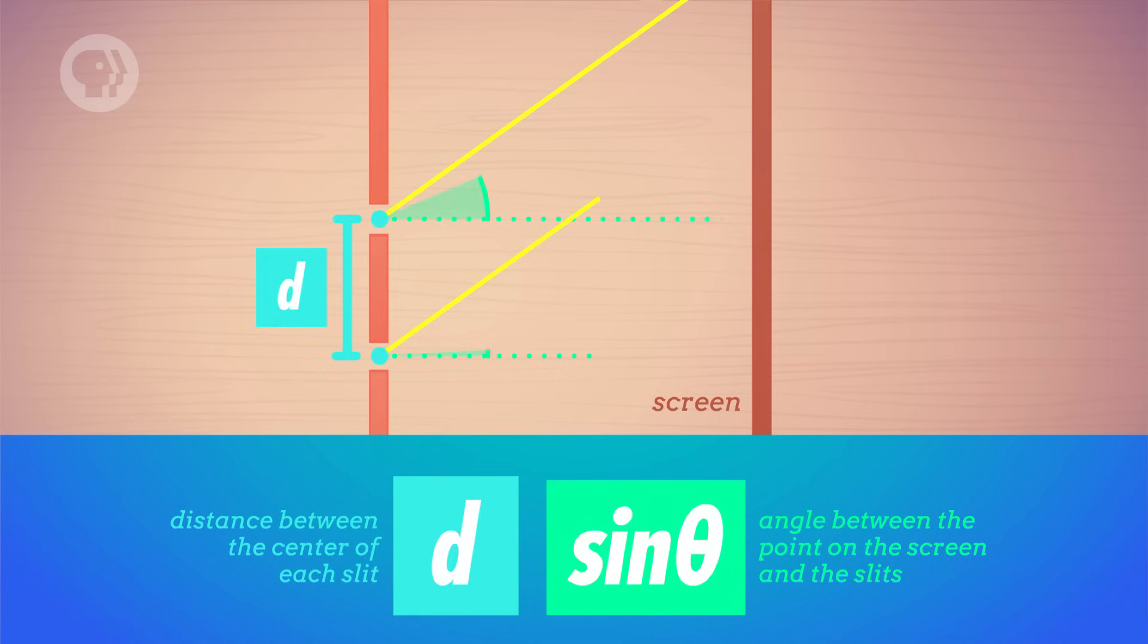By using trigonometry, you can calculate the path difference in a slit experiment. It's equal to the distance between the center of each slit, d, multiplied by the sine of the angle between the point on the screen and the straight line between the slits and the screen.